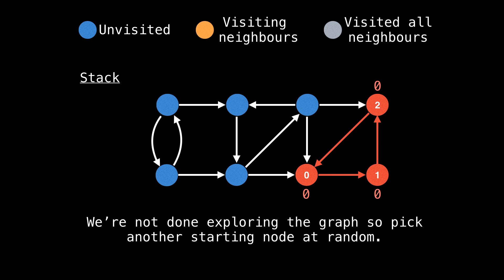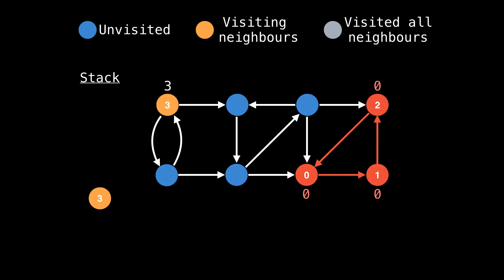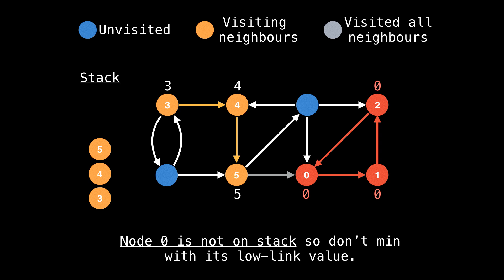However, we're not done exploring the graph, so pick another node at random. Let's start at node three and go right. Now our only option is to go down. Now we're at node five — let's take the edge to node zero. Node zero is already visited, so we can't go there. On the callback, we notice that node zero is not on the stack at the moment, so we can't min node five's low link value against node zero.